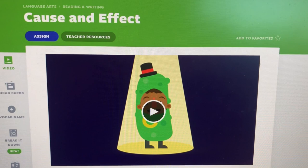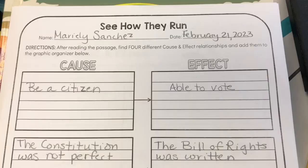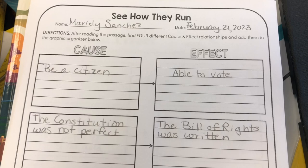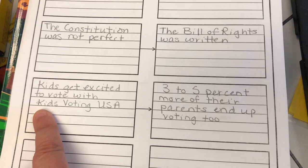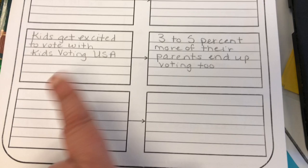After that I showed them the cause and effect vocabulary video, then we looked at our anchor text for Unit 4 weeks 1 and 2, which is 'See How They Run,' since we already read it last week. Today we found cause and effect relationships and completed a graphic organizer. We went through different parts of the passage — for example: to be a citizen they're able to vote; the Constitution was not perfect so the Bill of Rights was written; kids get excited to vote with Kids Voting USA so 3–5% more of their parents end up voting. Then students came up with one final cause and effect relationship on their own.